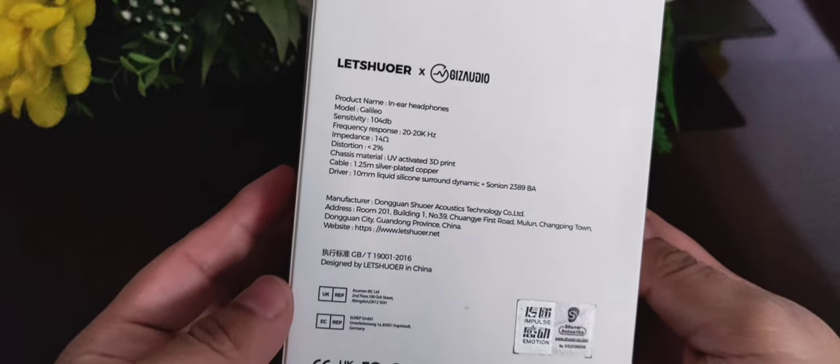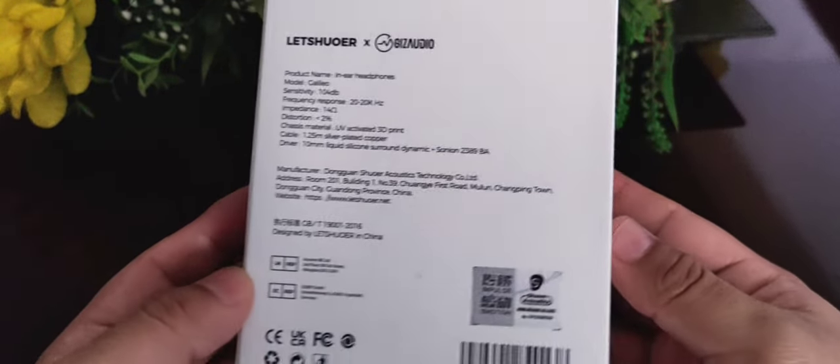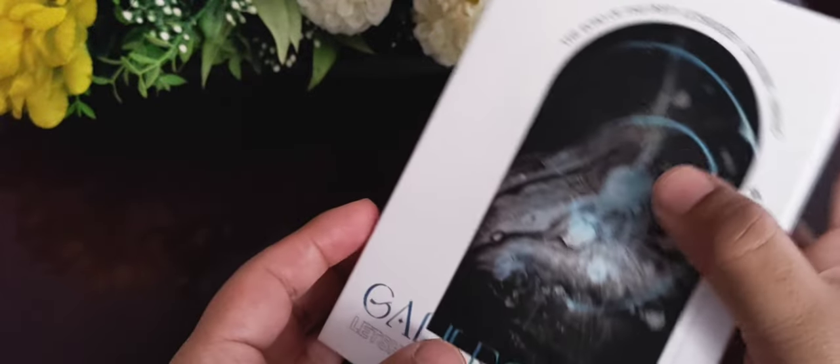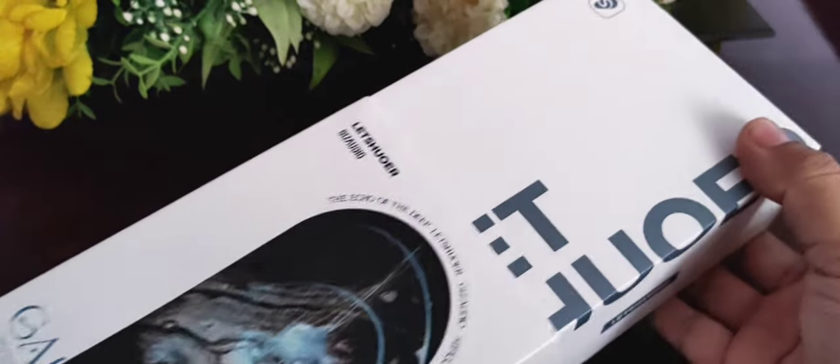Iniciamos con el empaquetado de los Galileo. Let's Shure nos ha acostumbrado a notar que, aunque simple, no es sinónimo de una presentación insípida. De hecho, el diseño es bastante atractivo con ese arte en la parte frontal de la caja. Me agrada lo que hace esta marca.